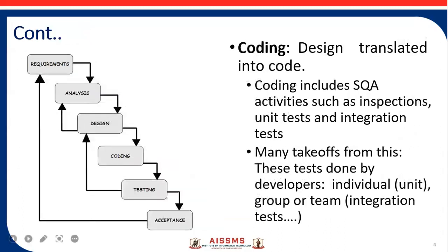The next phase is the coding phase. Whatever design has been done is translated into code. Coding also includes SQA — Software Quality Assurance — activities such as inspections, reviews, and integration. This is done by developers individually, as team members, or as a group through integration testing, with multiple tests performed here.